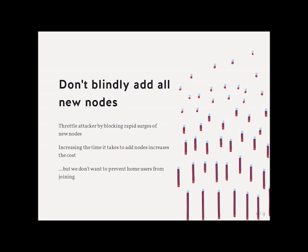By only accepting new nodes to the network when there is a capacity deficiency, we can throttle how fast an adversary can add nodes. This of course needs to be balanced against the fact that we don't want to prevent home users from joining.